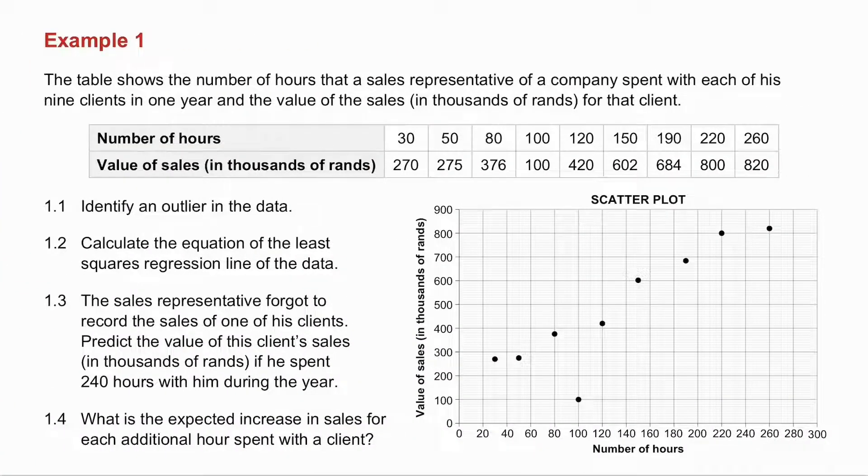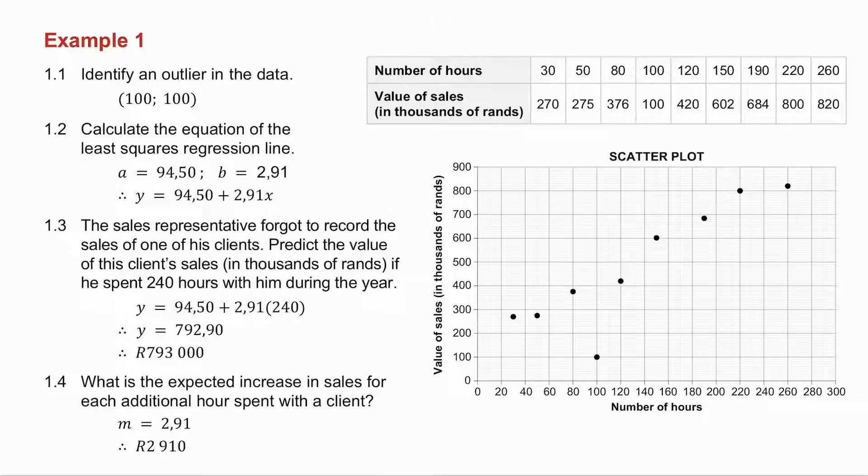Example number one. I want you to pause the video, try this yourself, and then we'll do it together. The first question is to identify an outlier in the data. It's that point over there, because it's far away from all the others, so the outlier is the point (100, 100).